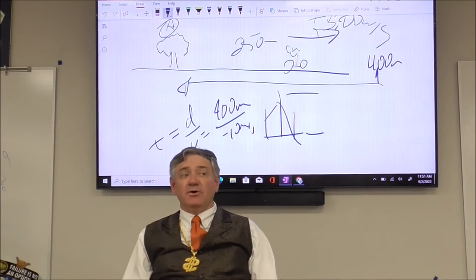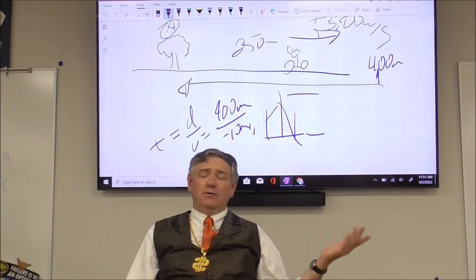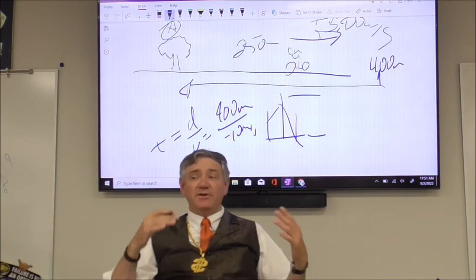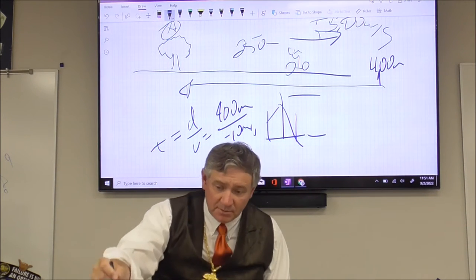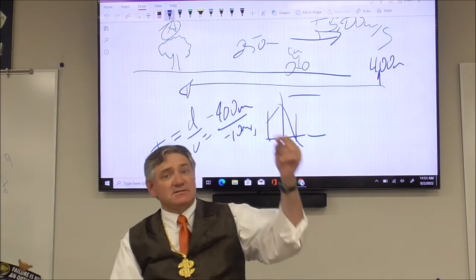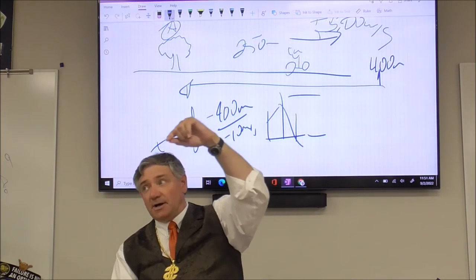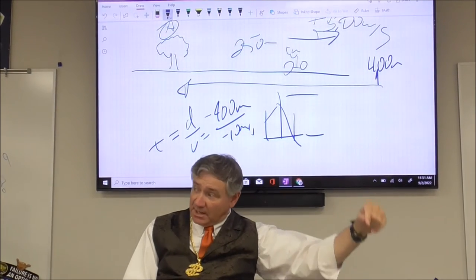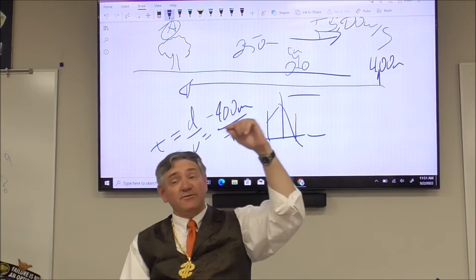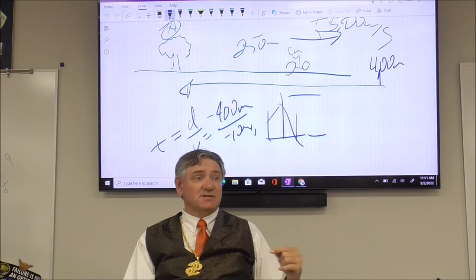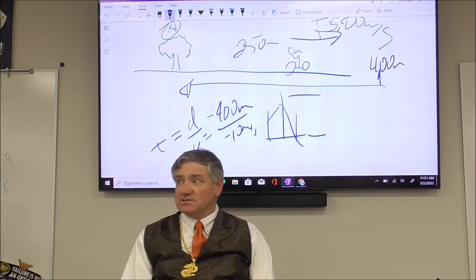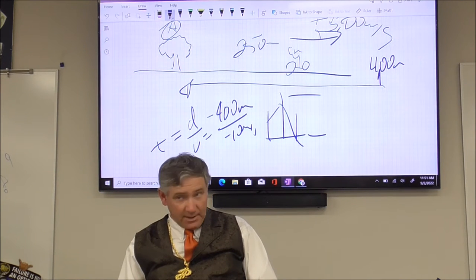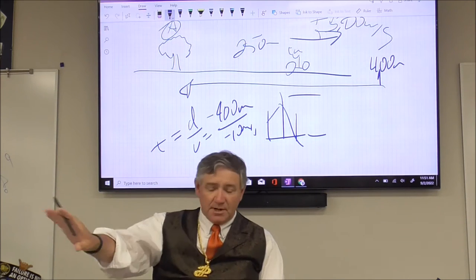There are two ways to approach this. You can just ignore it — but you're going to miss the whole point of the problem. If you work the problem holistically and go: that's negative 400 meters divided by negative 10 meters per second, then you still end up with positive time. So if you randomly end up with a negative sign for time, don't ignore it — you have missed some big idea along the way. That should take care of that problem.